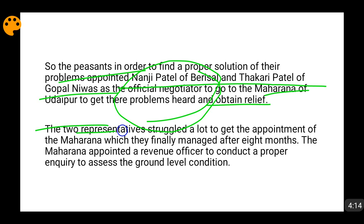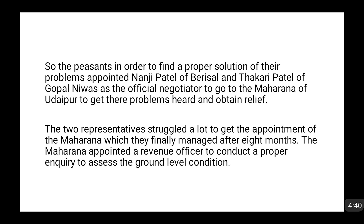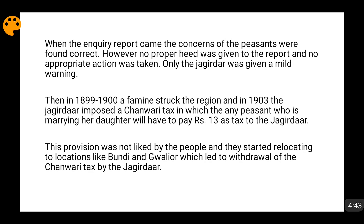These two representatives went to Udaipur and struggled for eight months to meet the Maharana. After eight months, they finally met him. The Maharana listened to their problems and appointed a revenue officer to conduct a proper inquiry to assess the situation and report back to him. The revenue officer conducted the inquiry and confirmed that the concerns of the peasants were correct and genuine. However, when the report reached the Maharana of Udaipur, no proper action was taken by the state administration.